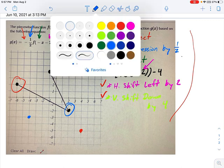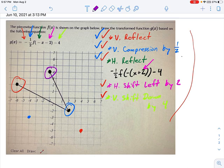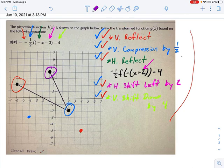And now we can move on with the final dot, which we will do in purple. Okay. First, we vertically reflect it. So that's going to go down to negative four. Right here. Okay. Done.